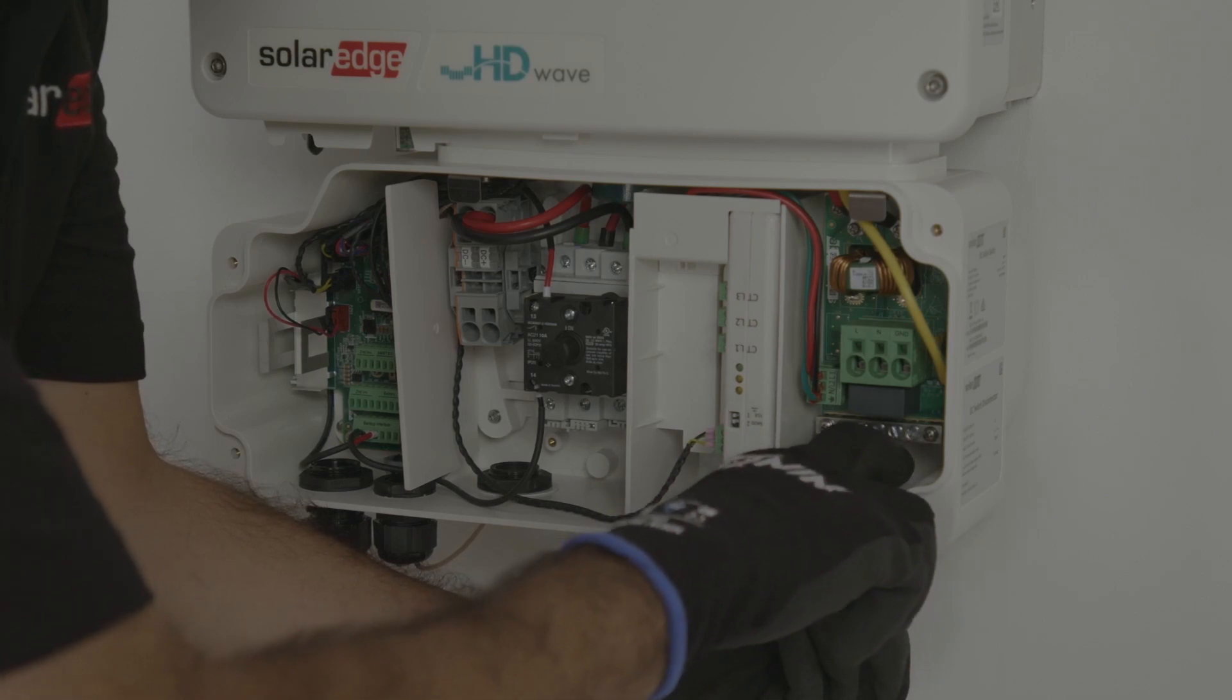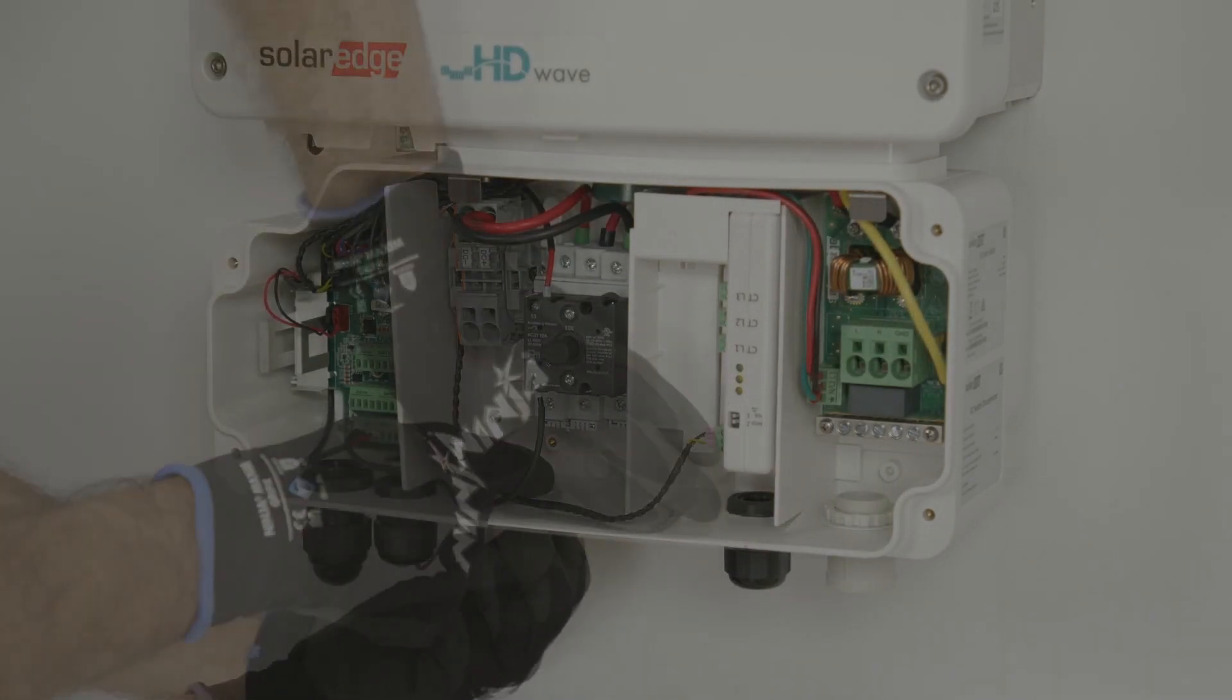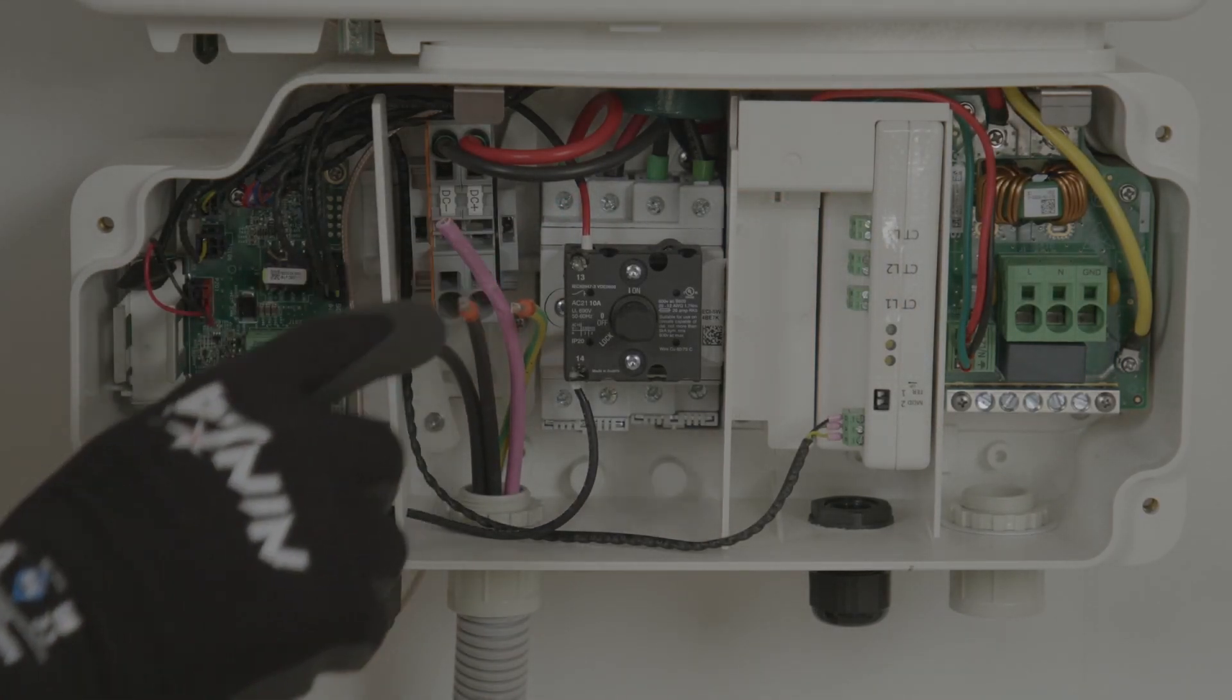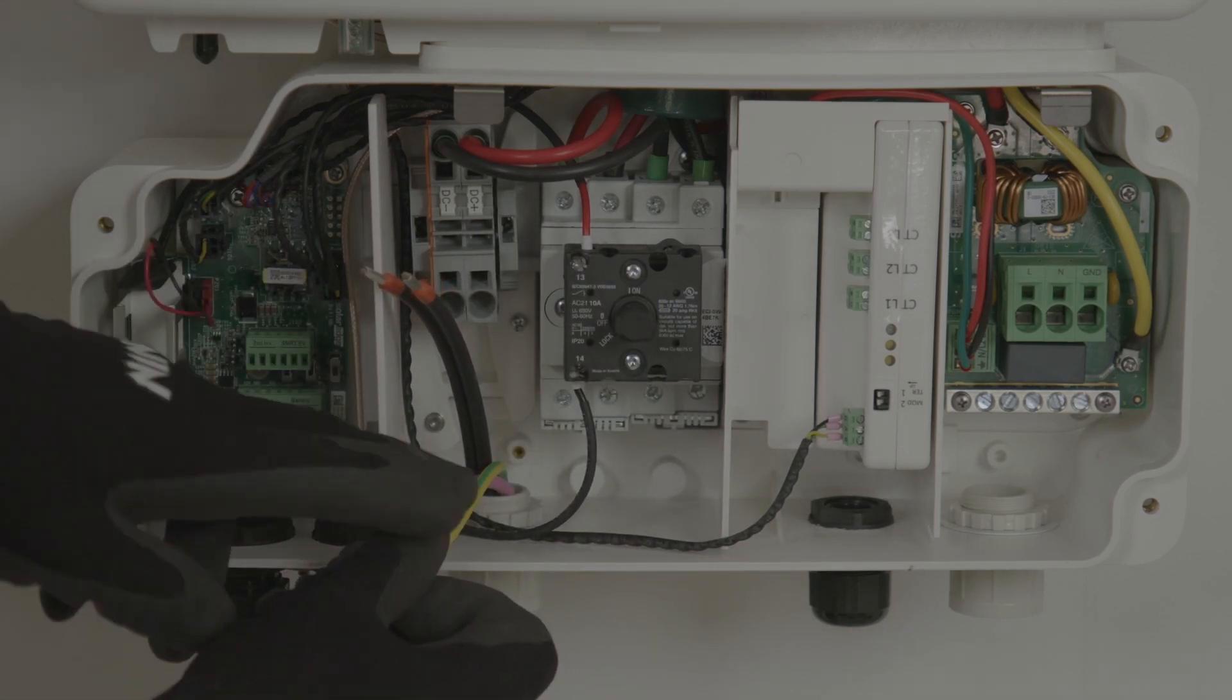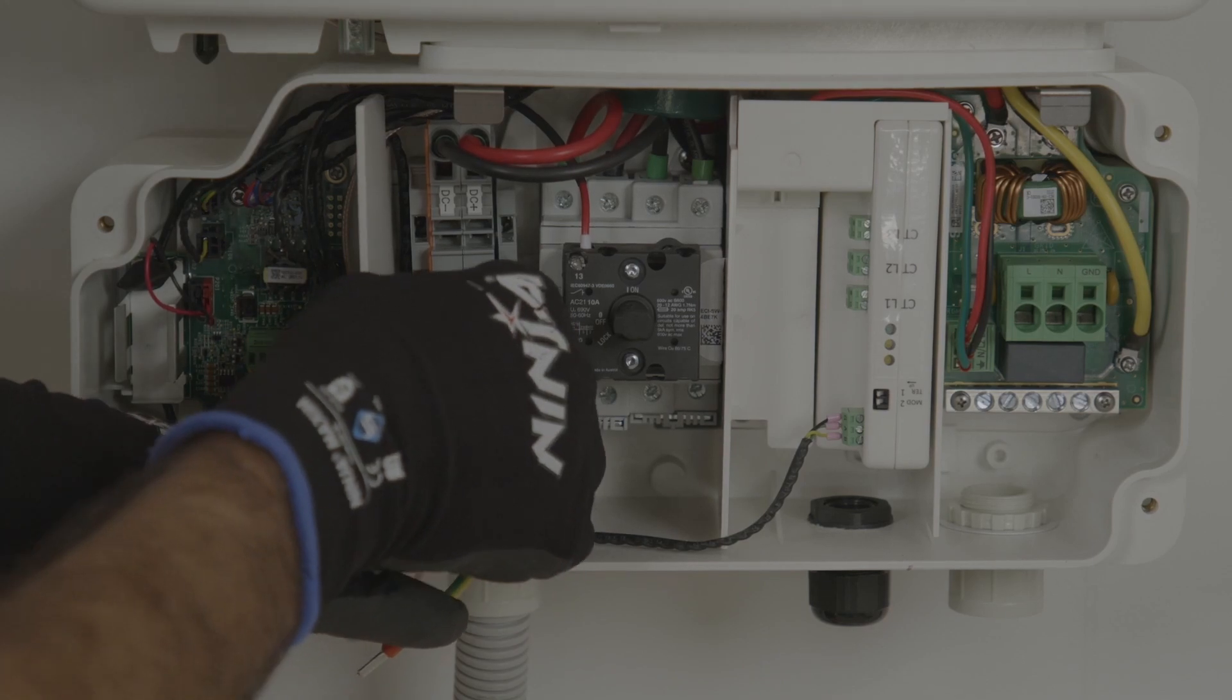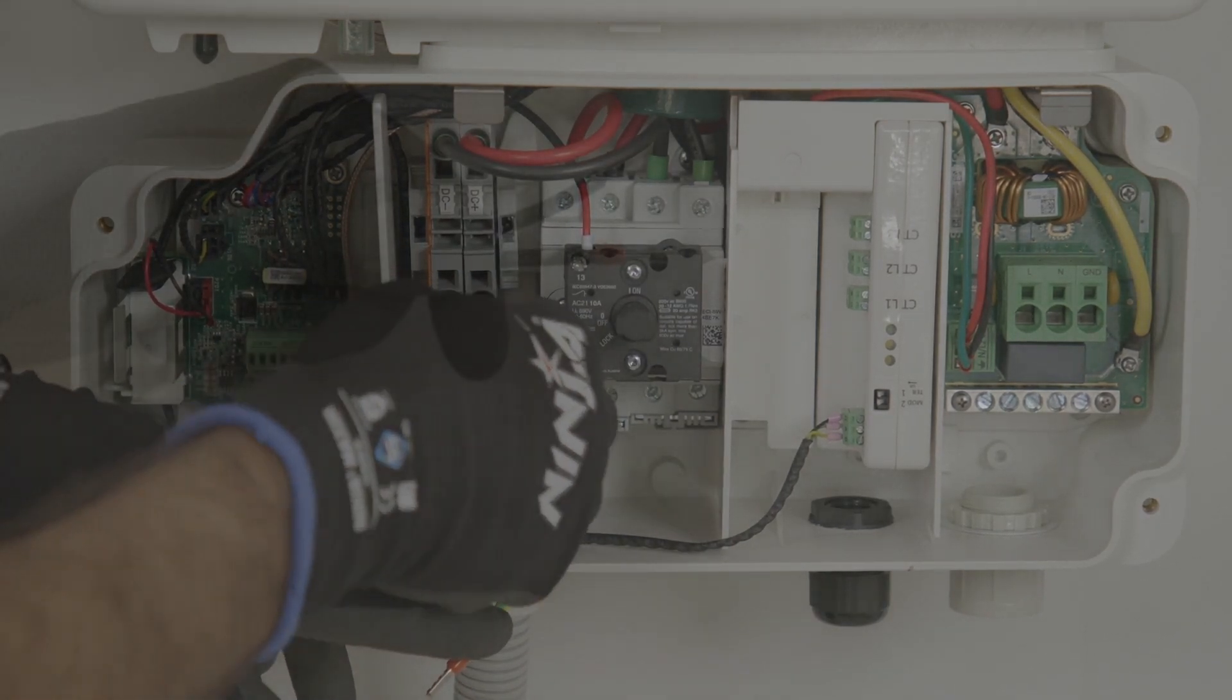The energy hub inverter comes with the provision for conduit entries from 25 to 32mm. To start with, we're going to be bringing in the DC connections. This could either be from the DC combiner or directly from the associated PV and batteries. Simply plug in the DC plus and negative terminals.